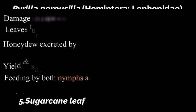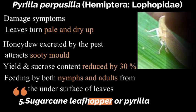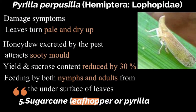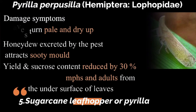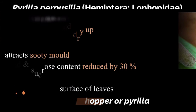Sugarcane leafhopper or pyrella: Pyrilla perpusilla, which belongs to the family Lophopidae and comes under the order Hemiptera. Damage symptoms: leaves turn pale and roll up upon feeding by both nymphs and adults from the undersurface of the leaf. Honeydew excreted by the pest attracts sooty mold. Yield and sucrose content is reduced by 30 percentage.